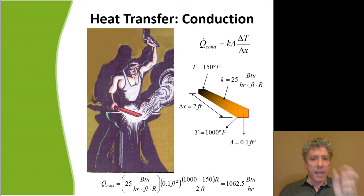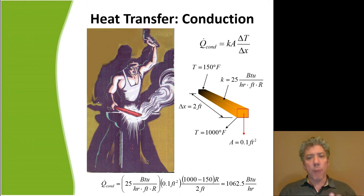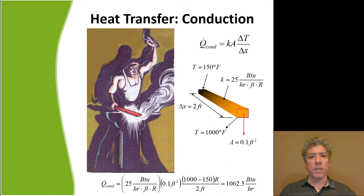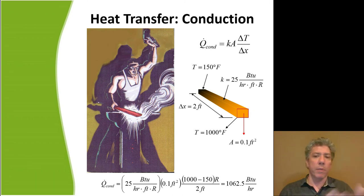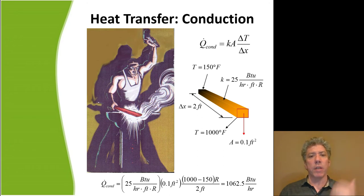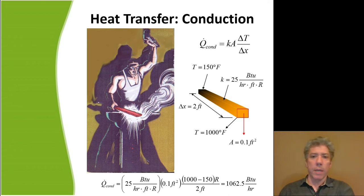K, the thermal conductivity, is a property of materials. You should go to the table of thermal conductivities in Chapter 3 — you should look at them. You may be surprised at what has the highest thermal conductivity, so go look it up.